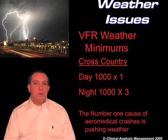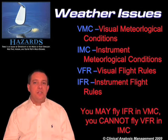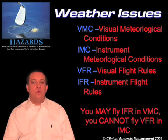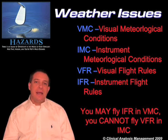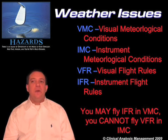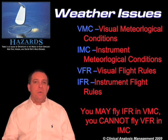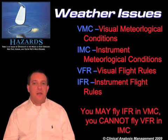Putting this all together: if we meet those weather minimums, we are in VMC conditions. The advantage of being in VMC is it allows us to fly under Visual Flight Rules — VFR. VFR rules are used by pilots to fly essentially unaided, not flying on instruments but based on their visualization. If we don't meet VMC conditions and we're in IMC conditions, then in order to operate the aircraft, the pilot has to fly under IFR — Instrument Flight Rules.